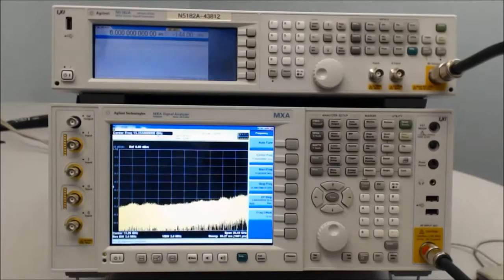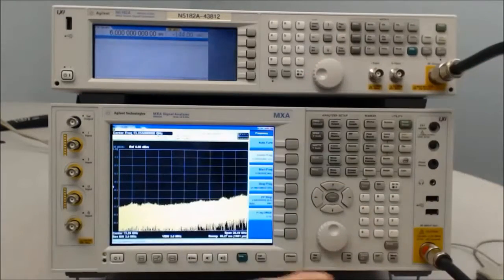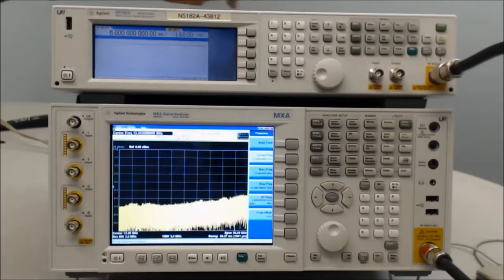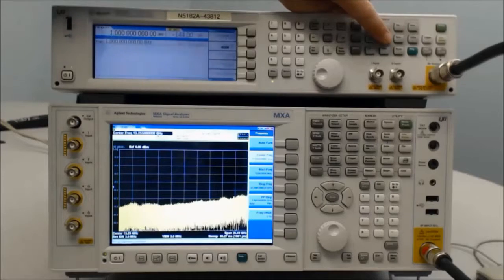To measure FM deviation and FM rate, we'll utilize the MXG. Ensure the output of the MXG is hooked up to the input of the MXA. Set the frequency of the MXG to 1 kHz and go into the FM plus PM menu.